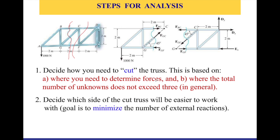Step two: you need to decide which side of the cut truss will be easier to work with. This depends on the number of unknowns found and also on the support reactions. I would always use the side that has the least number of support reactions, because that will reduce the number of unknowns to use.